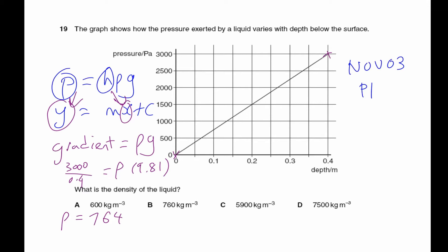In this question, they give you the graph of pressure versus the depth below the surface. In case you're wondering why is it a straight line through the origin, it's because of the formula.